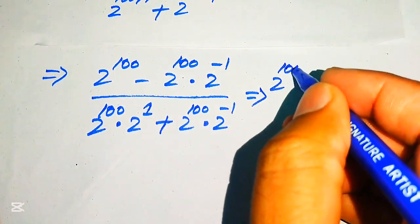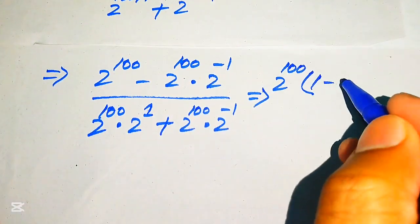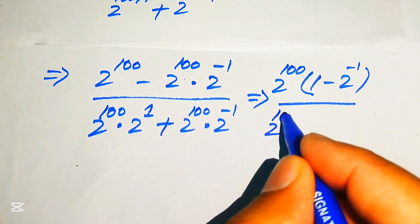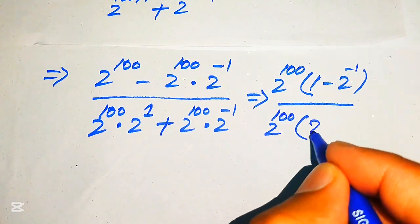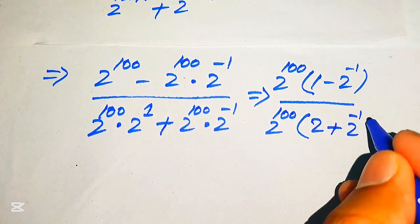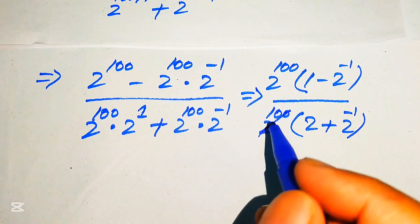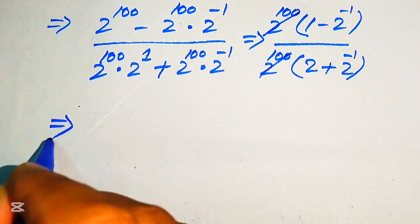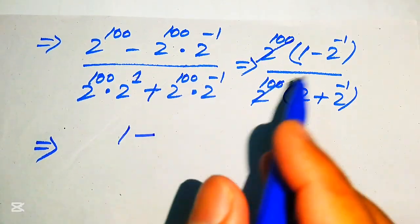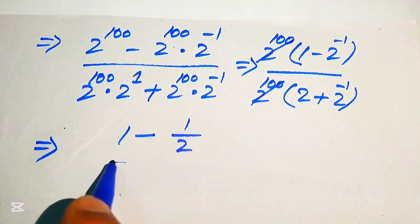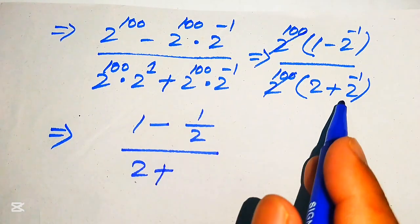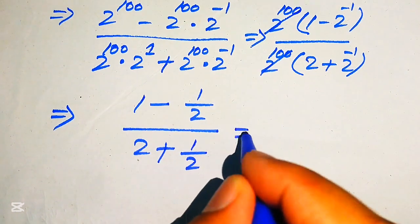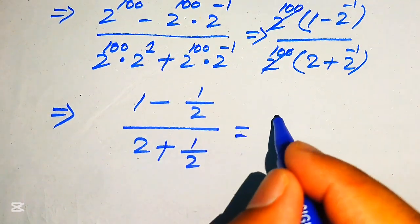In the numerator we take 2 to the power of 100 as common, and in the denominator we also take 2 to the power of 100 as common, leaving the remaining values as 2 plus 2 inverse. The 2 to the power of 100 terms cancel out, and we obtain: 1 minus 2 inverse, written as 1 over 2, divided by 2 plus 2 inverse, written as 1 divided by 2. We then take the LCM of both the numerator and denominator terms.